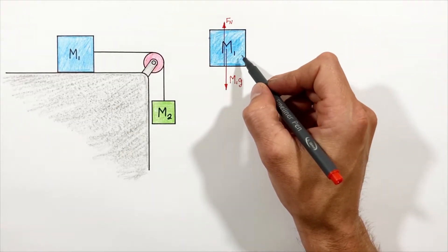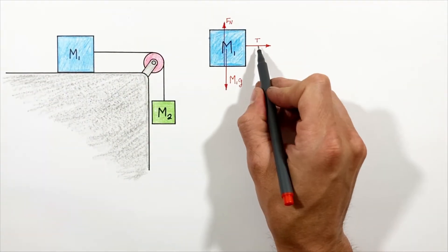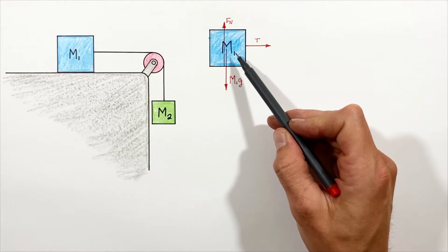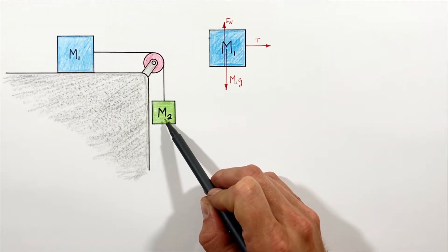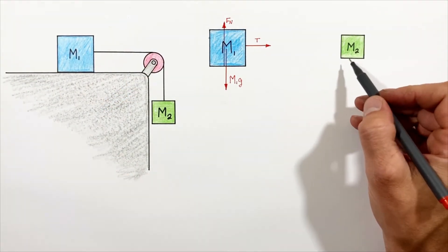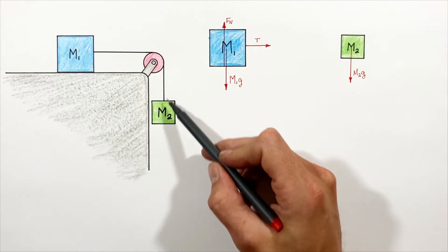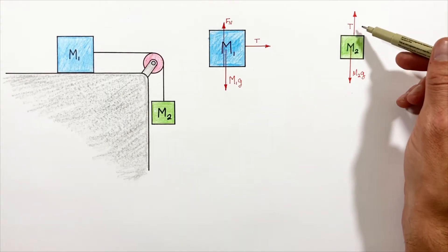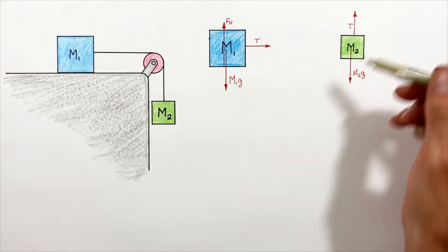The third force acting on the block on the table is the tension from the string, acting to the right — I'll call that T for tension. To work out a solution we need to look at the forces acting on both blocks, so we need to draw a free body diagram for the hanging block as well. The hanging block has only two forces: gravity acting downward, and the tension in the string pulling it upward.